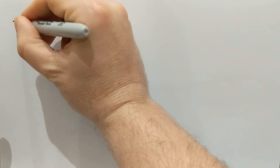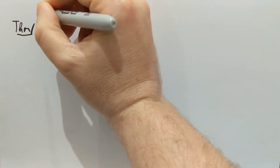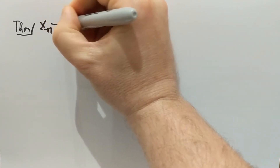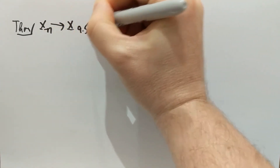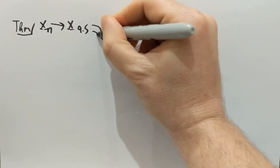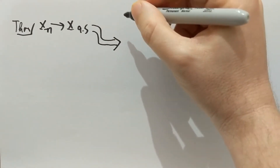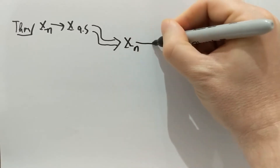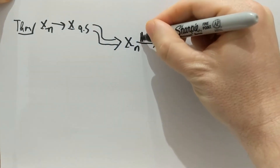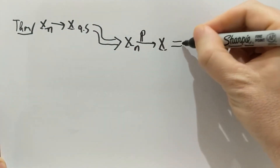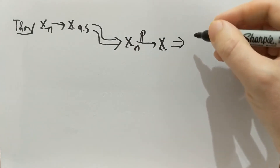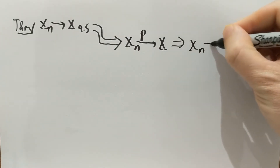Hi everyone. In this video I'm going to tell you which mode of convergence is stronger than the other. The theorem I'm looking at is the following: Xn converges to x almost surely implies Xn going to x in probability, which in turn implies Xn going to x weakly.